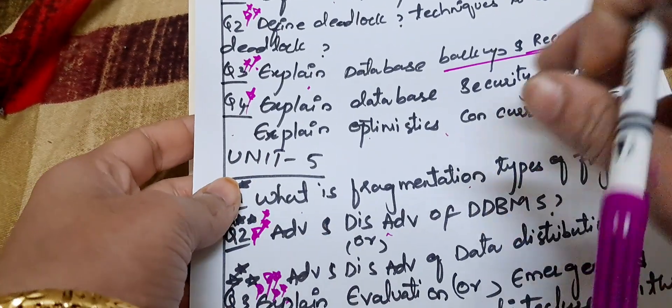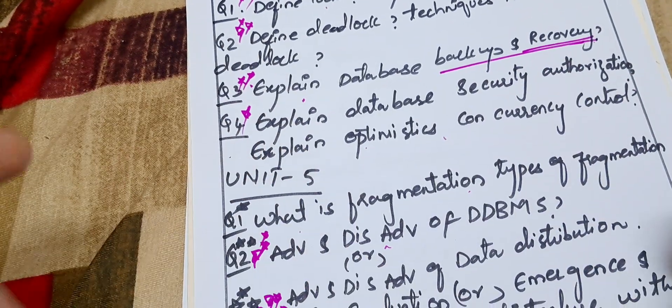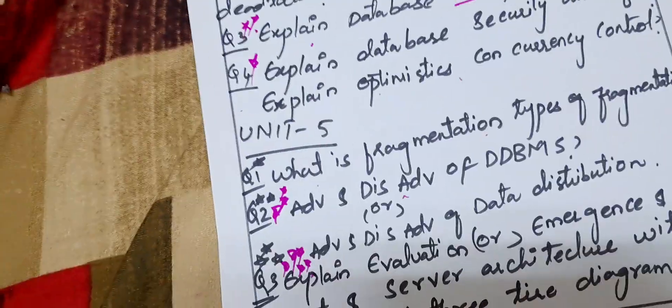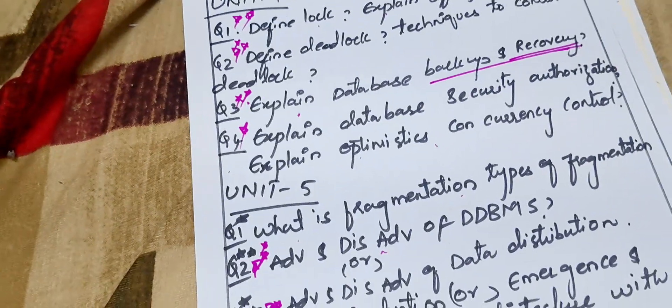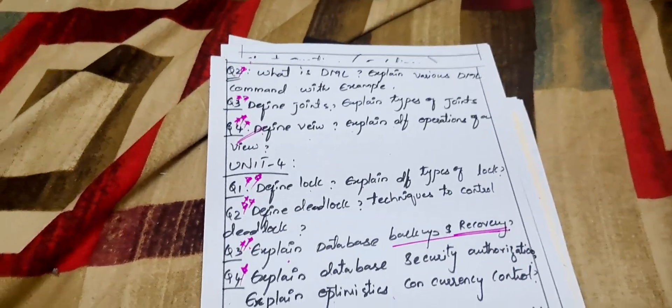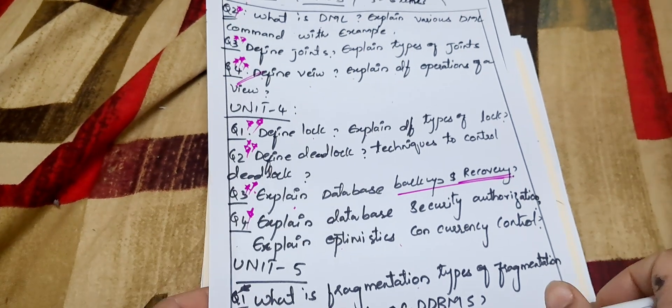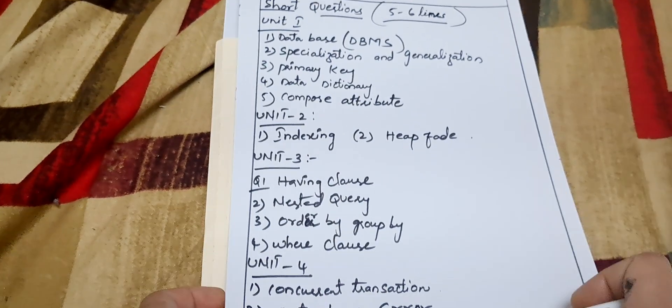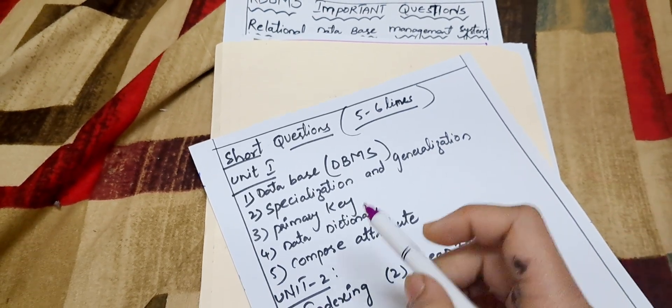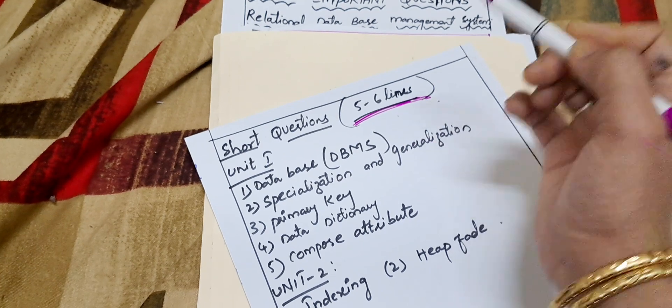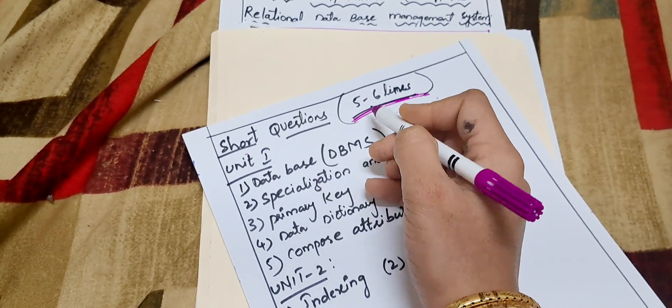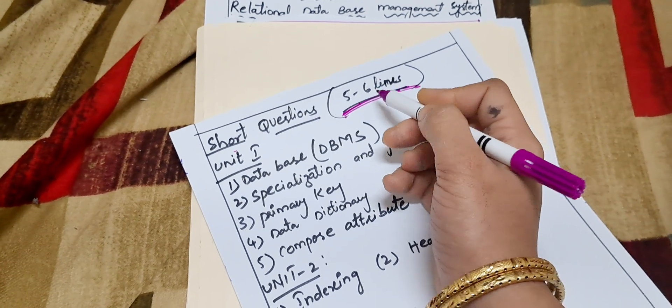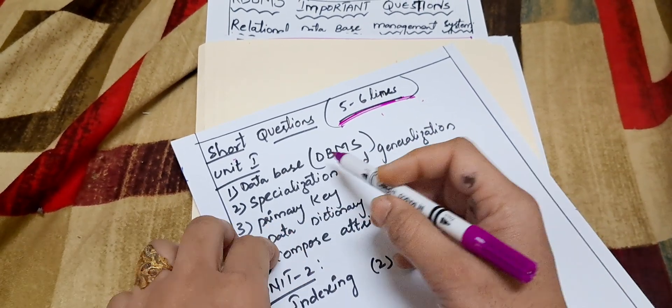This covers all the long questions for all five units — Unit 1 through Unit 5 — according to Osmania University syllabus. Now let's move on to short questions. Whenever you are writing short questions, write only five to six lines in RDBMS. Make sure the content is meaningful; if your content is meaningful you will get full marks.